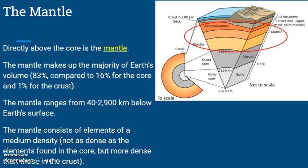The next layer we're going to talk about is the mantle — this layer circled here, the yellow and orange layers. The mantle makes up the majority of earth's volume: 83% of the earth's volume is mantle, compared to only 16% for the core and only 1% for the crust. The mantle ranges from 40 to 2,900 kilometers below earth's surface, so it's very thick. The mantle consists of elements of medium density — not as dense as the elements in the core, but more dense than those in the crust, which is why they're in the middle.